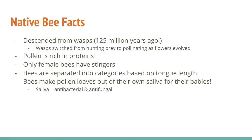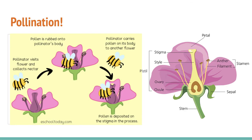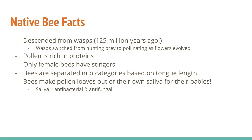Another thing: only female bees have stingers. Sweepingly across all native bees and honeybees, the female bees are the workers, so they're going to be the ones mostly out and about — that's basically why they have stingers. Another cool thing is that bees are actually separated into categories based on tongue length, which absolutely makes sense when we take into account the anatomy of a flower. If you have a very long style, you're going to need a bee that has a very long tongue in order to pollinate it. And if you have a very short style, you're going to need a bee that has a shorter tongue in order to drink from it.